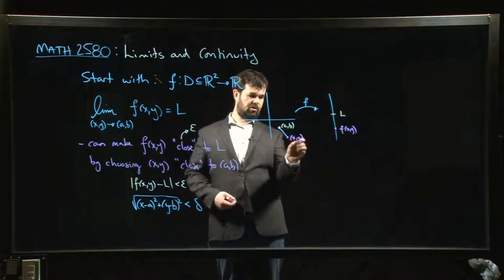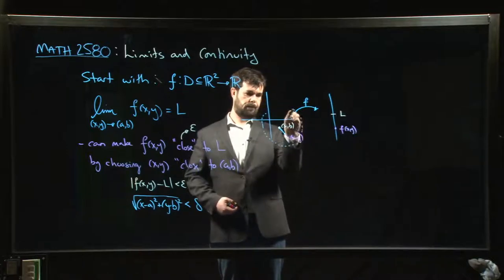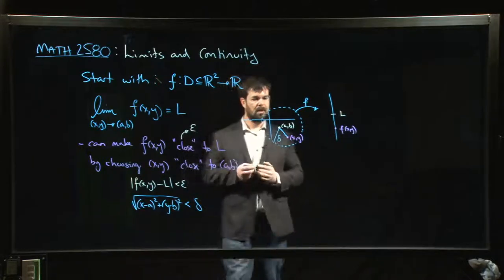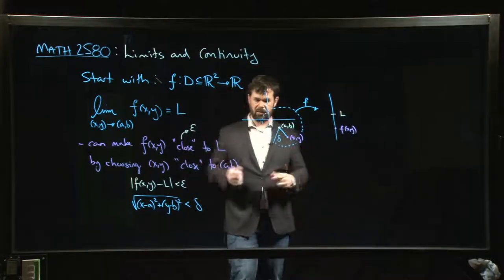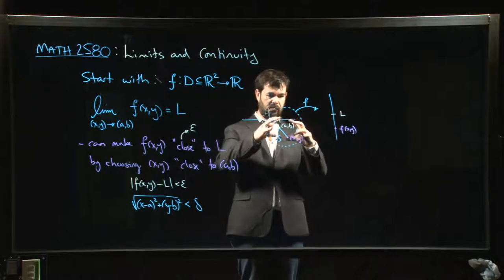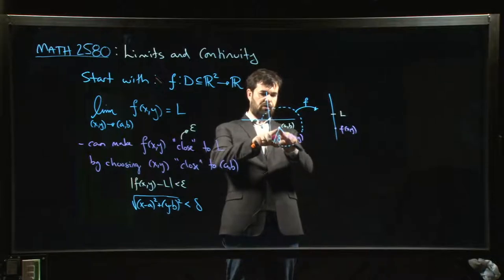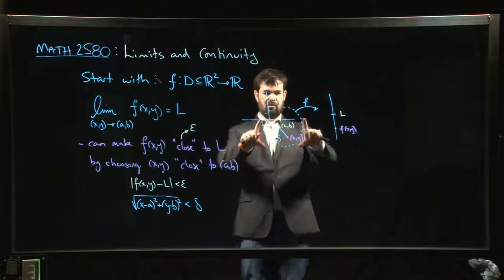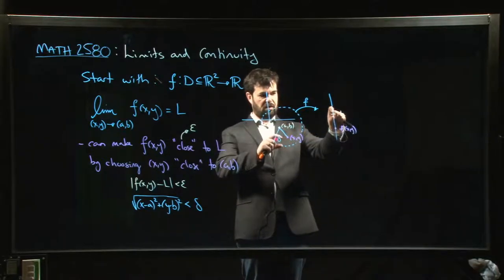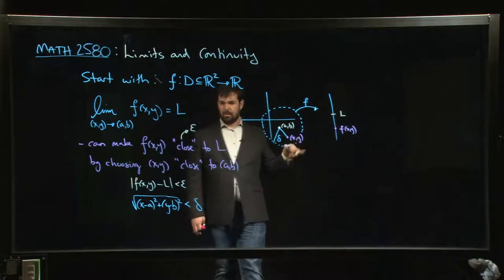The boundary of this condition is just a circle, so what we're really saying is that we want the point (x, y) to lie within some disk of radius delta. In three dimensions, instead of a disk you have a ball — the interior of a sphere. The idea is that as you shrink this disk down, it forces these points to get closer and closer to (a, b), and saying that you have a limit means that as you shrink this disk, all points within it should produce outputs getting closer and closer to L.